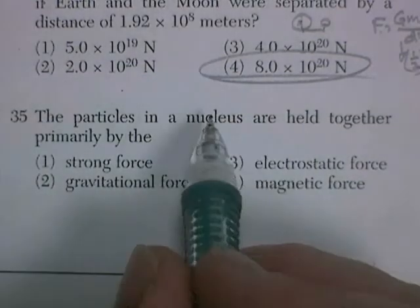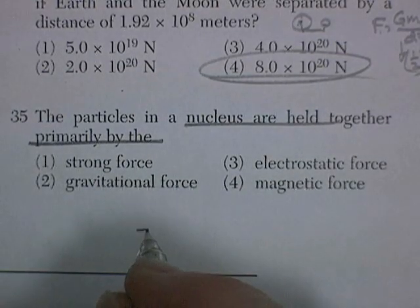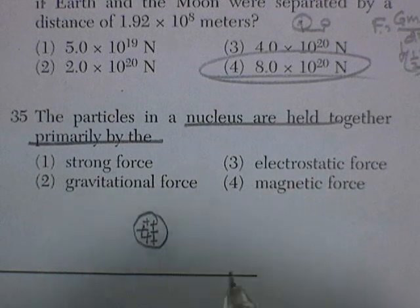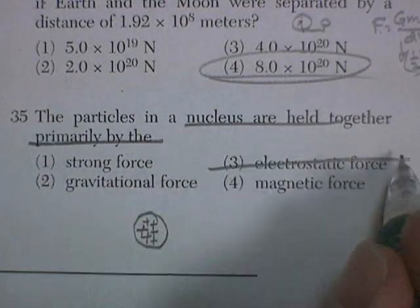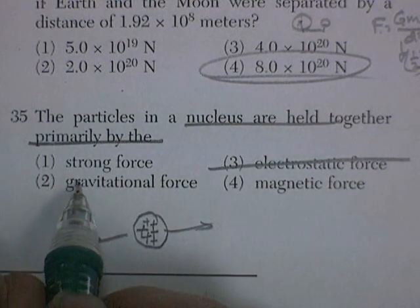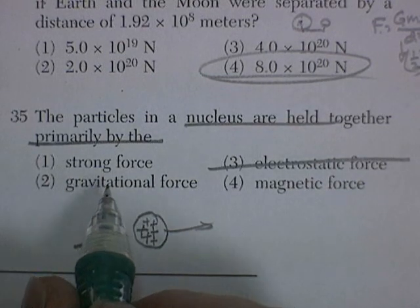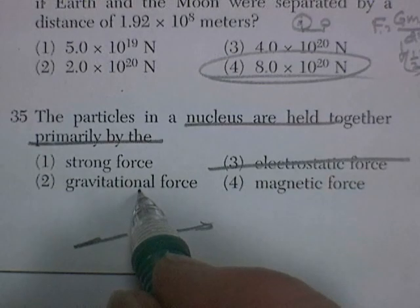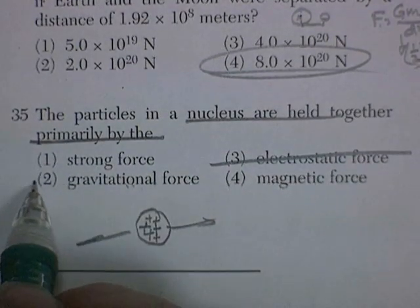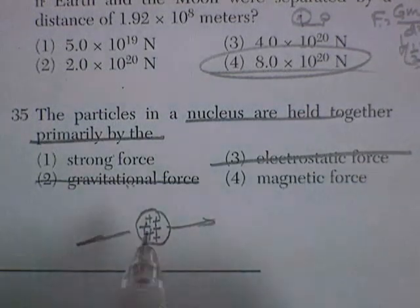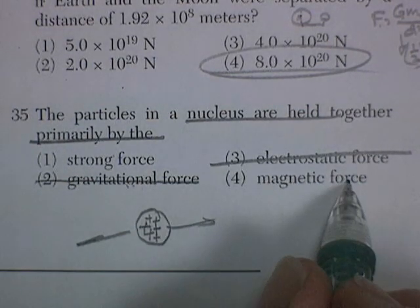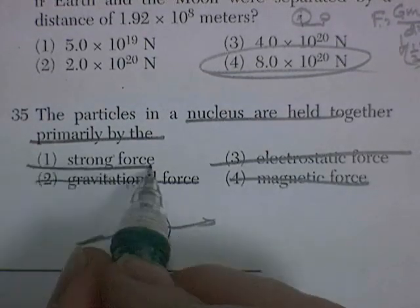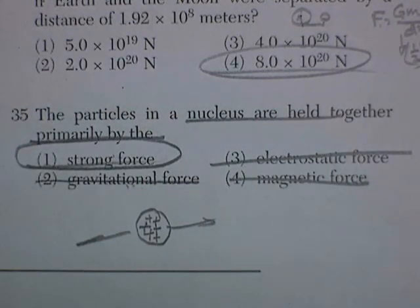Question 35. The particles in the nucleus are held together primarily by what? The nucleus is mostly protons and neutrons. Electrostatic force would try to push them apart. Incredibly small masses, so gravity doesn't fit in — fitting gravity in with the other forces is what unification theory is all about; Einstein couldn't do it on his deathbed. Magnetic force? No. It's the strong force. The strong force holds the nucleus together.